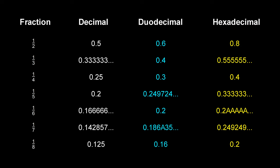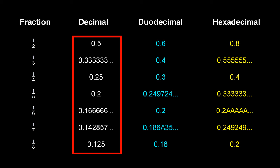Let's have a look at what some fractions look like in each base. In decimal: half is 0.5; a third is 0.3 recurring, which is messy; a quarter is 0.25, which is also a bit messy; a fifth is 0.2; a sixth is 0.16 recurring, which is messy; a seventh is 0.142857; and an eighth is 0.125, which is a bit messy.